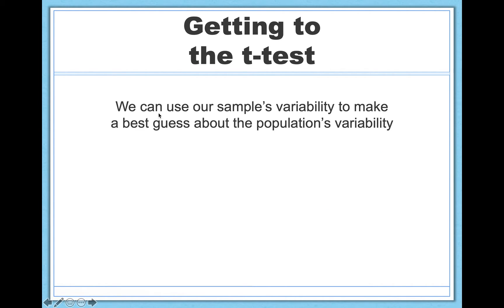So how can we do that? How can we design a test? It's going to be called the t-test, spoiler alert, that's basically appropriate for a study in which we don't know the true population standard deviation. And here's the answer. It's a really simple solution. We can use sample variability to make a best guess about population variability.